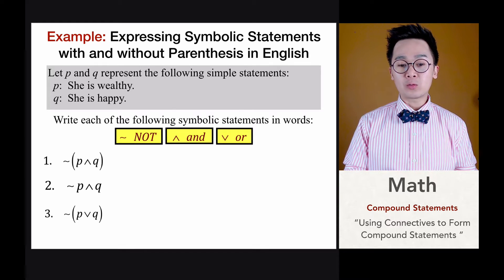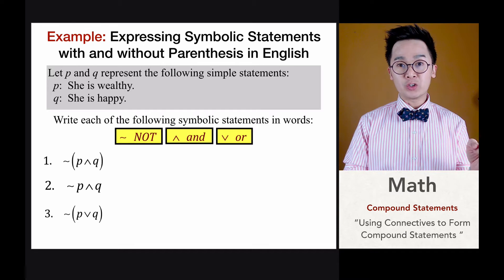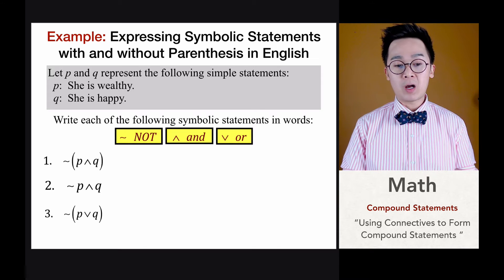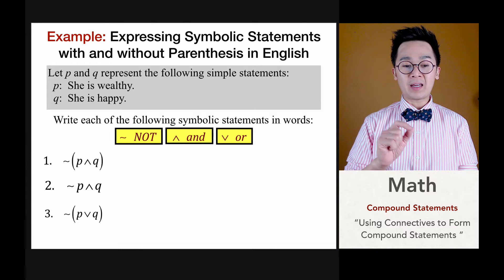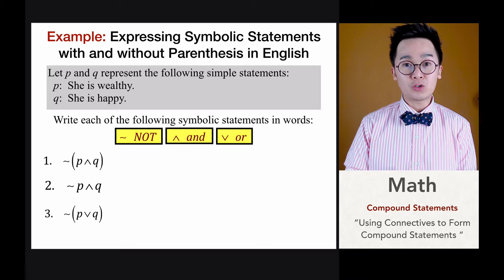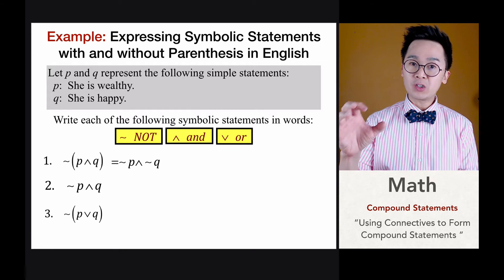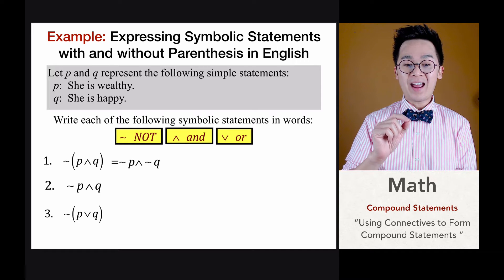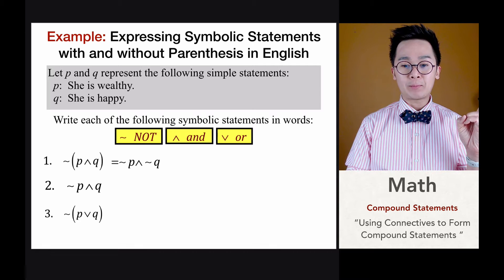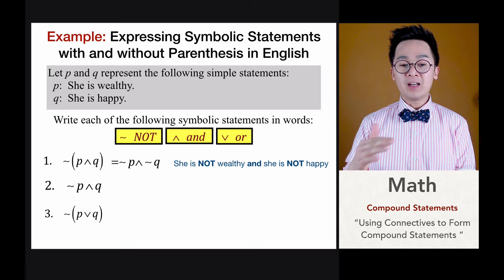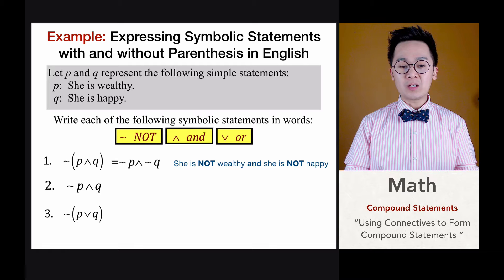In these examples we have three operations: the negation or 'not,' the conjunction or 'and,' and the 'or' operation represented by V. For problem number one, we have the quantity of P and Q with the negation of the entire parentheses ¬(P∧Q). Just like distributing a negative sign in math, we can distribute the 'not' symbol, giving us not P and not Q — 'she is not wealthy and she is not happy.'